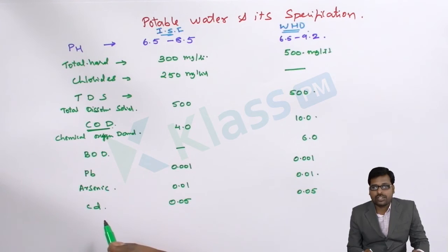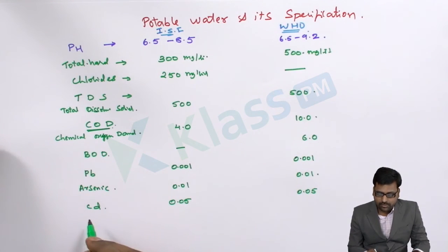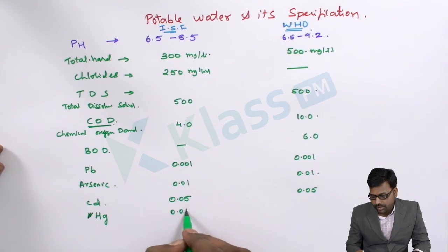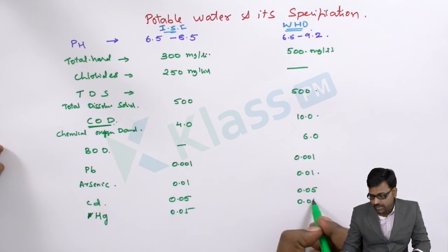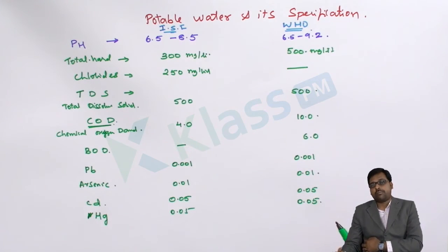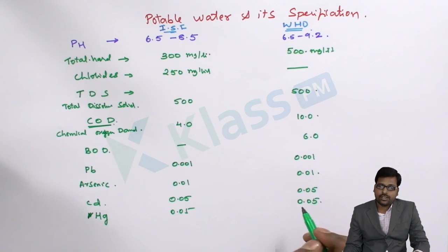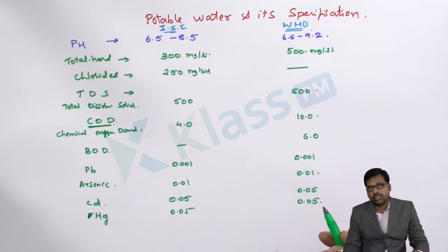And even the mercury, if you see the mercury it is also given 0.05 and 0.05. And this mercury contamination in potable water will lead to the Minamata disease. That is the reason the mercury is avoided. Minamata disease is also of Japan origin.